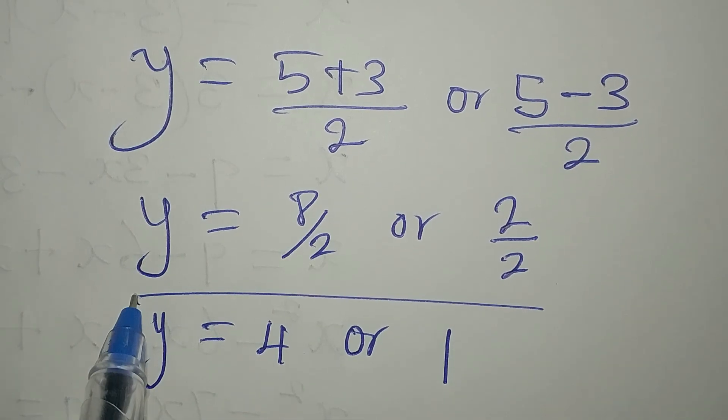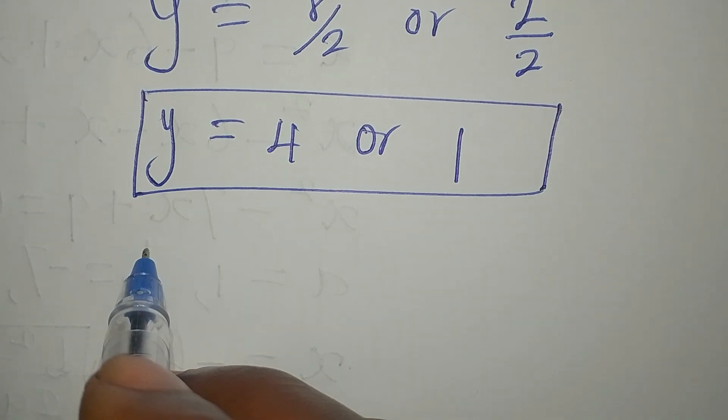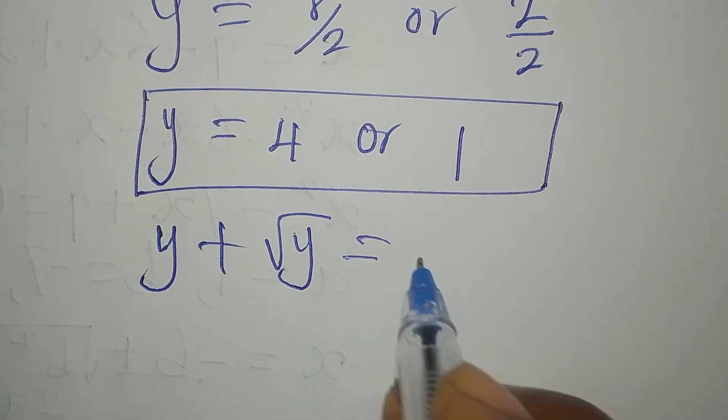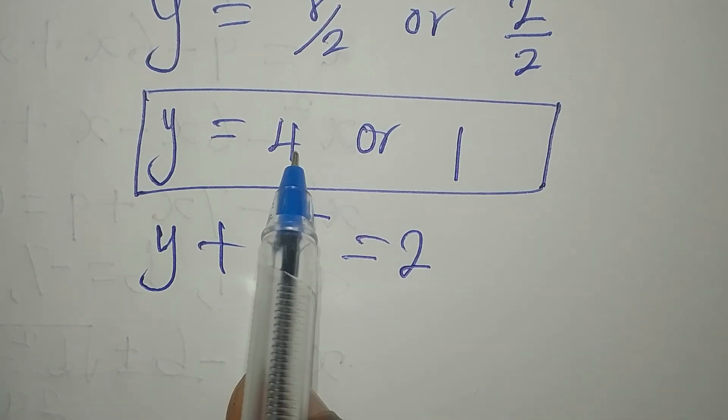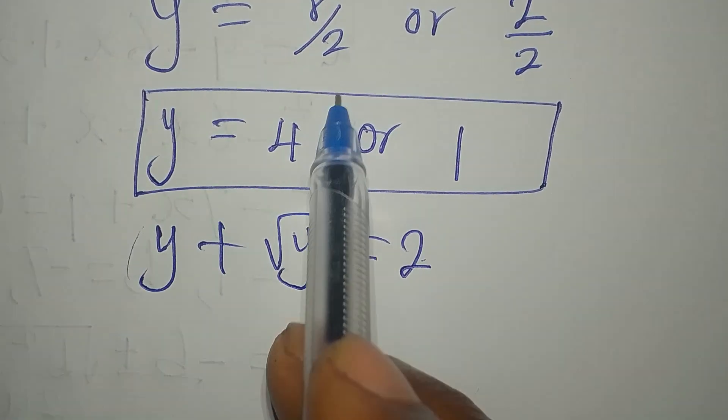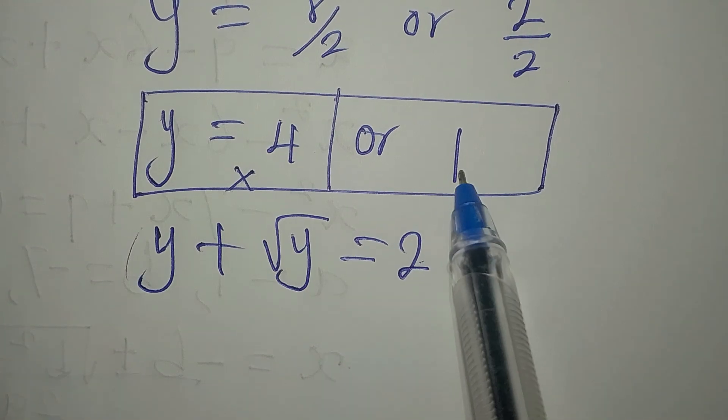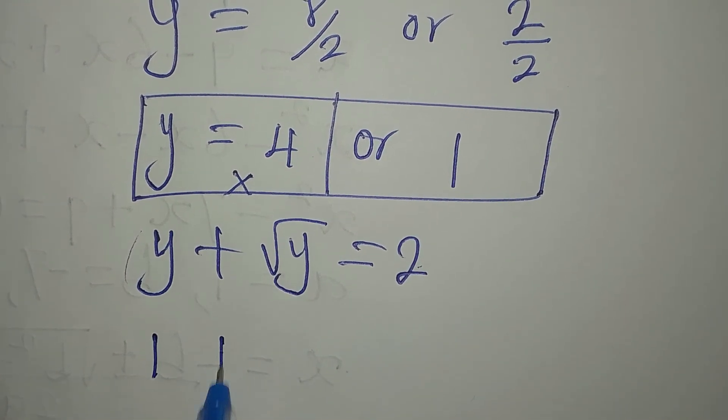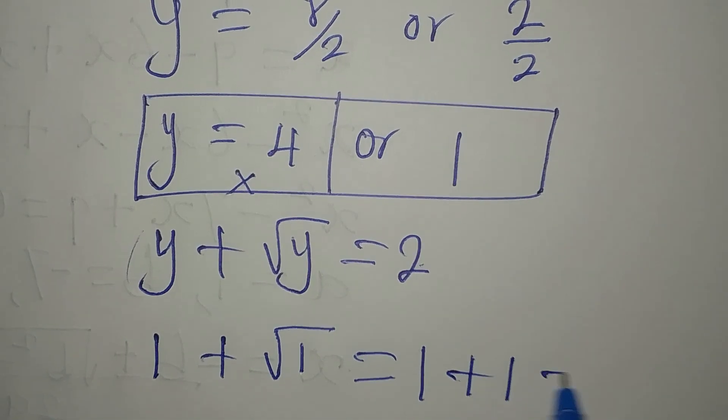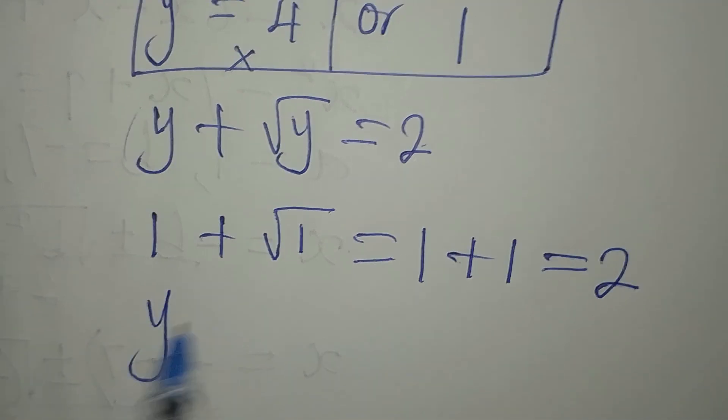But, obviously, both of them will not satisfy the equation. What is the equation again? Our equation is Y plus square root of Y equals 2. If I put 4 here, it's already more than 2. So, this 4 here has to be rejected. But, if you put 1 here, you have 1 plus square root of 1, and that is 1 plus 1, and that is equal to 2. So, the only solution is Y equals 1.